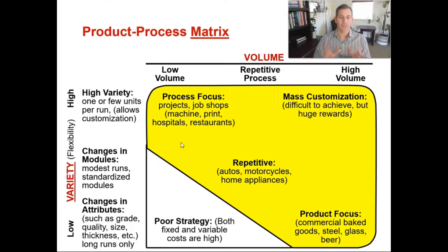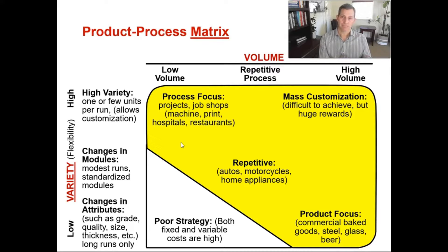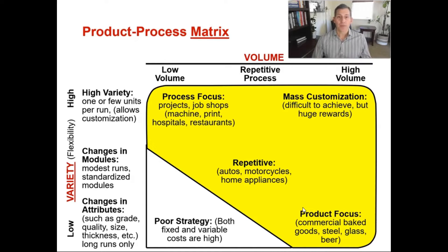A couple things to point out when we're talking about these different product and process differences: with a process focus, because everything is customizable or close to customizable, you might have low equipment utilization. Think about a hospital — that x-ray machine might sit there for a few more hours before the next patient comes in who also needs an x-ray, so that's low equipment utilization. On the flip side, for product focus process strategies, at Frito-Lay or a place that does commercial baked goods, they're probably running some of that equipment 24-7 — constantly running, so it's got high equipment utilization.